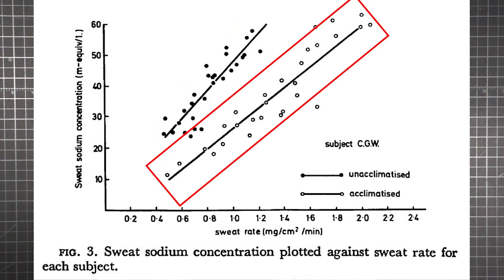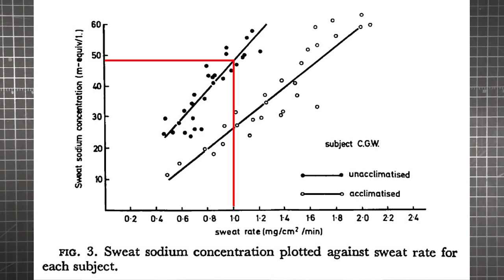The other key point of this graph is the difference between the two lines. Same guy, but before and after acclimatized to the heat. Before CGW was acclimated, he was losing about 48 units of sodium per measure of sweat. And after he got used to the heat, that dropped to only 27 units for the same fluid loss. Not quite, but getting close to only half as much sodium.